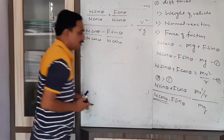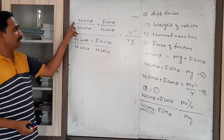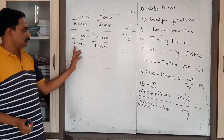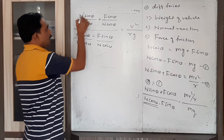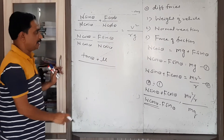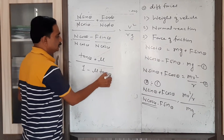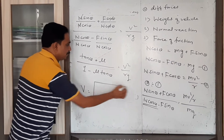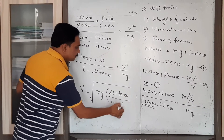Dividing every term by N cos theta, we get: (N sin theta / N cos theta + F cos theta / N cos theta) upon (1 minus F sin theta / N cos theta) equals v²/Rg. Here F/N is taken as mu, the coefficient of static friction. Simplifying, this gives tan theta plus mu, upon 1 minus mu tan theta, equals v²/Rg. Therefore the expression for maximum speed is: v equals under root of Rg times (mu plus tan theta) upon (1 minus mu tan theta).